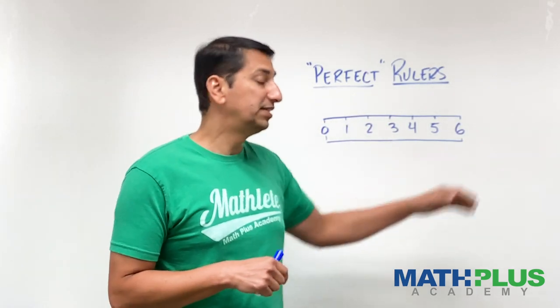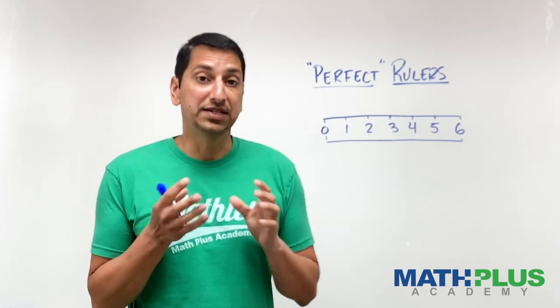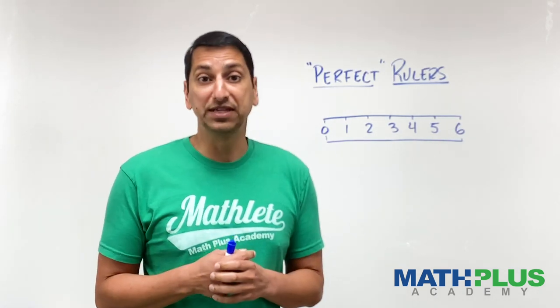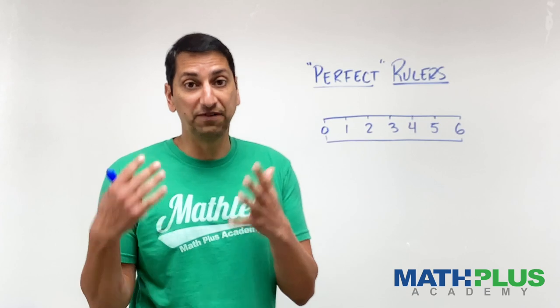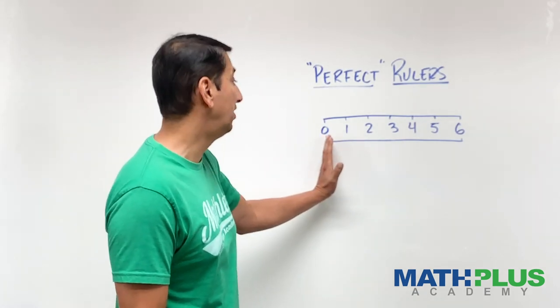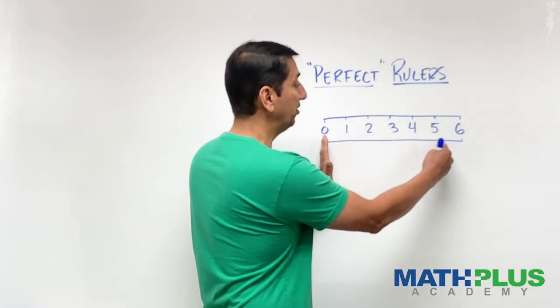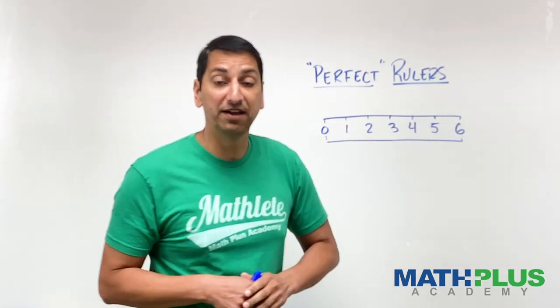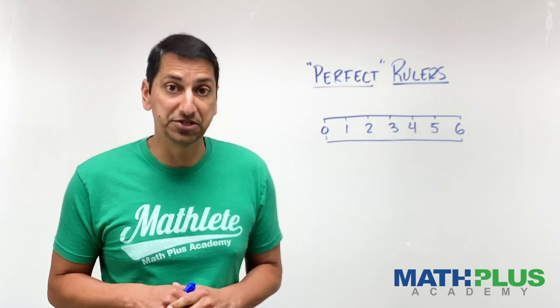Here I have drawn a ruler six units long, and you could obviously measure things that were one, two, three, four, five, and six units long on this ruler. You would just line the object up on this end, see how far it goes. If it went to there, you'd say, oh, that's a five unit long thing that you want to measure. Great.